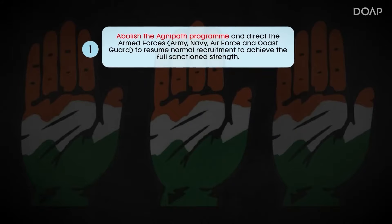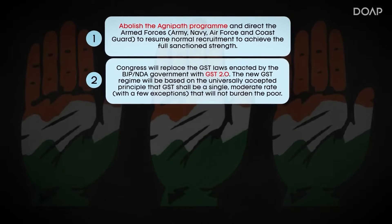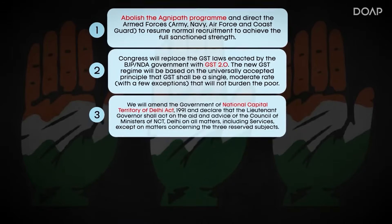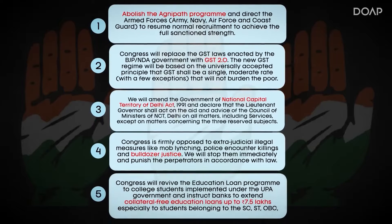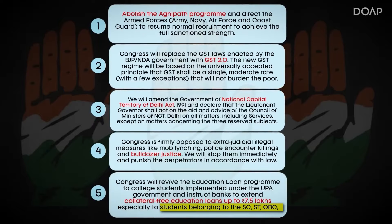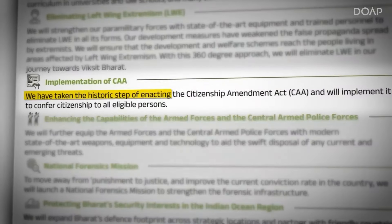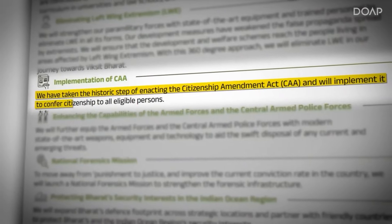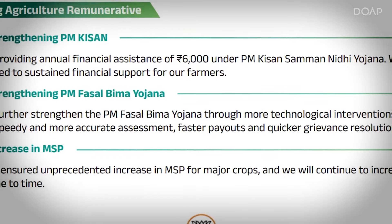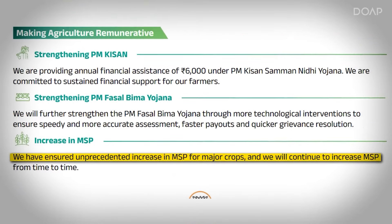There are other policy changes also suggested by Congress in their manifesto. BJP, as we all know, has openly guaranteed the enactment of CAA all over India. For farmers, they will increase the MSP, but without any legal guarantee.